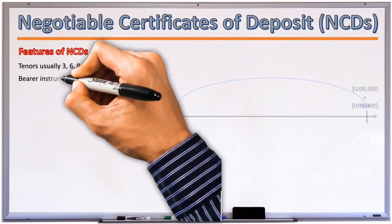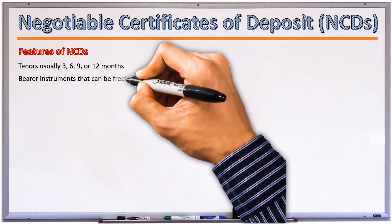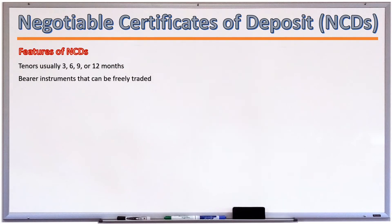NCDs are bearer instruments and can be sold and bought freely in the secondary market. This means that at maturity, the issuer of the NCD will pay the interest and capital amount to whoever holds the NCD at that point. This makes NCDs more easily tradable and liquid than fixed term deposits.